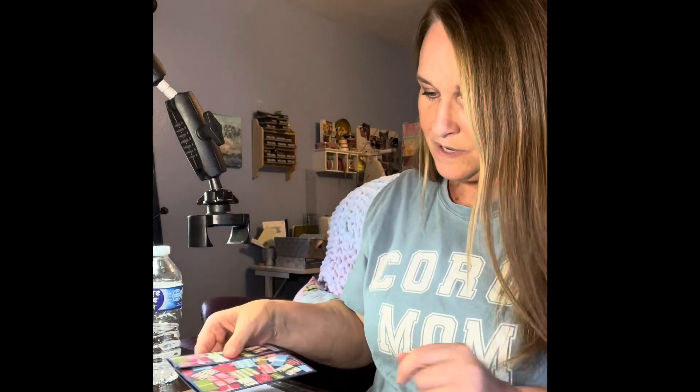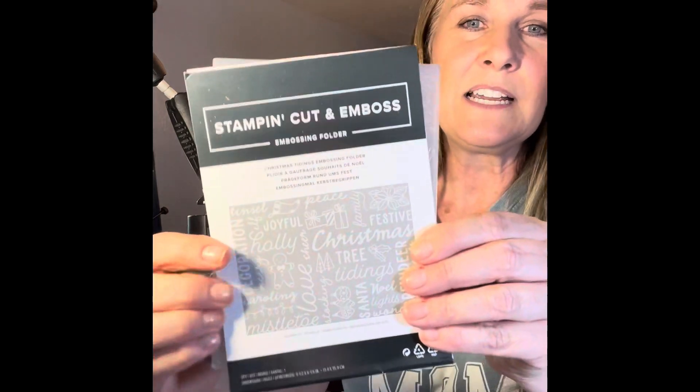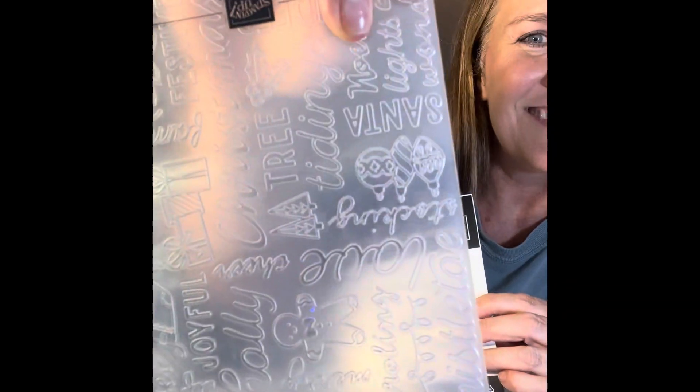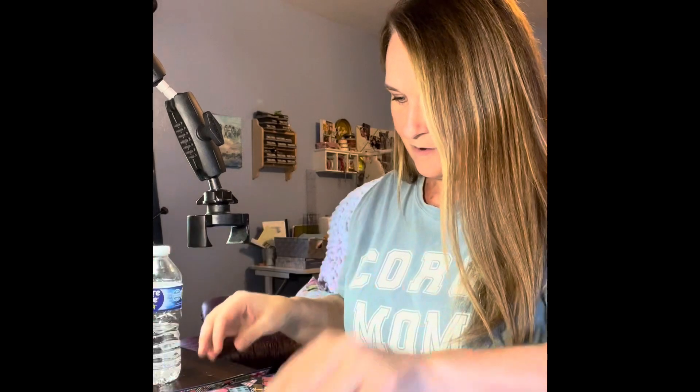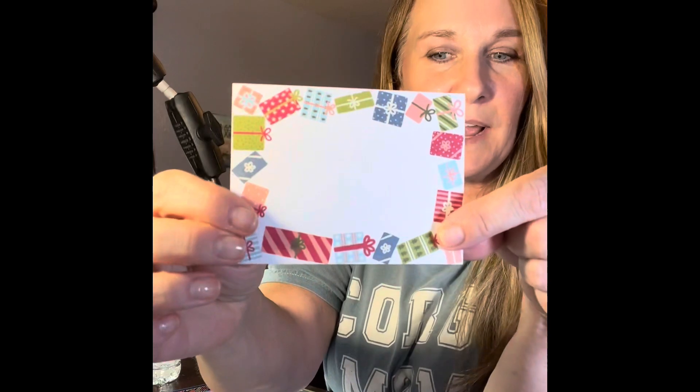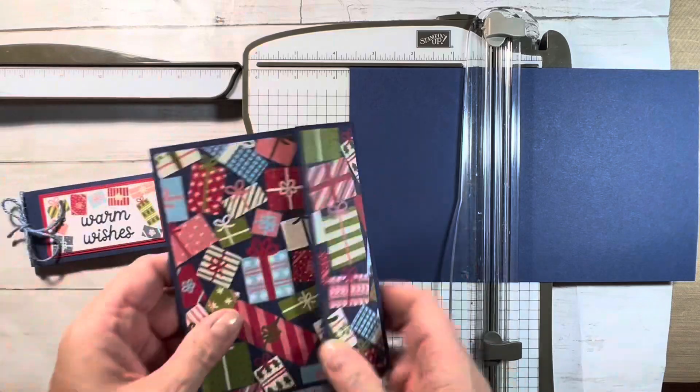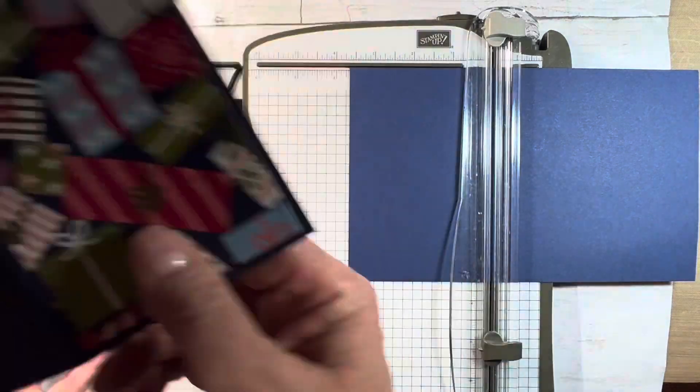We'll be using the Berry Christmas stamp set, the Christmas Tidings embossing folder, one of the Berry Christmas Memories and More cards from the card pack, and the Berry Christmas designer series paper, the 12 by 12 designer series paper. We'll use this little one with the presents; the back has the sweater pattern, so that's really cute.